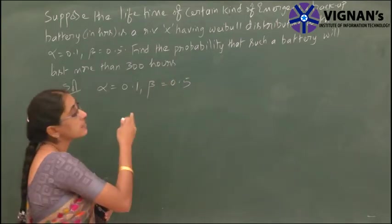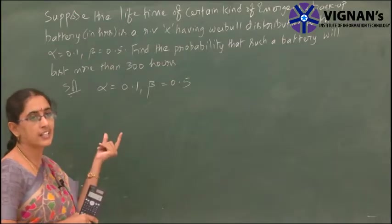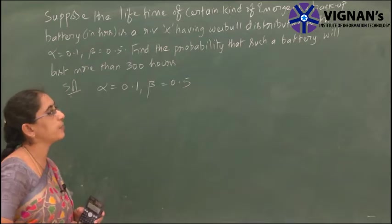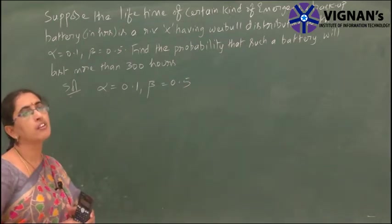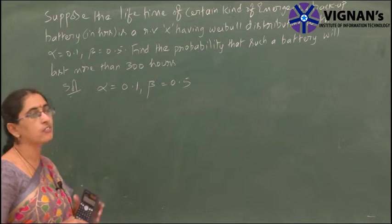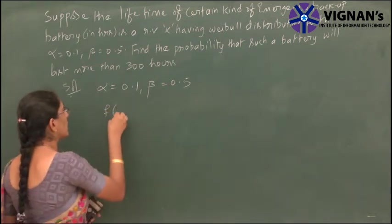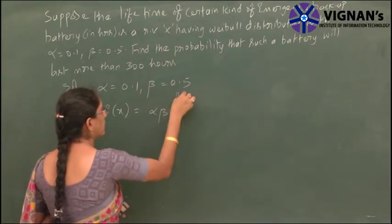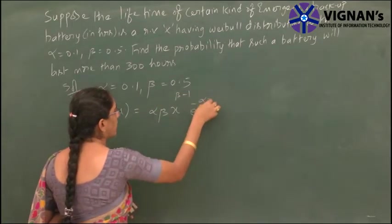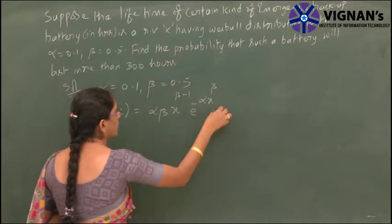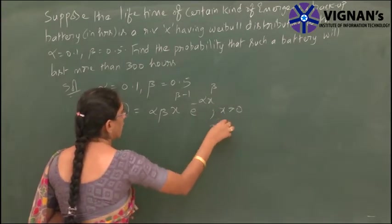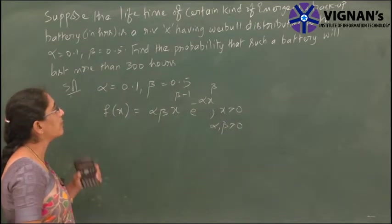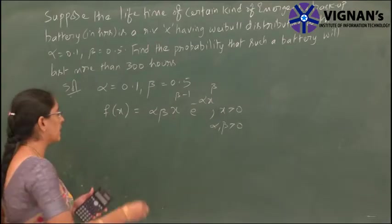The life of the battery is a random variable following the Weibull distribution. We have to find the probability that a battery will last more than 300 hours. The density function of Weibull distribution is alpha·beta·x^(beta-1)·e^(-alpha·x^beta), where x > 0 and alpha, beta > 0. We have to find P(X > 300).